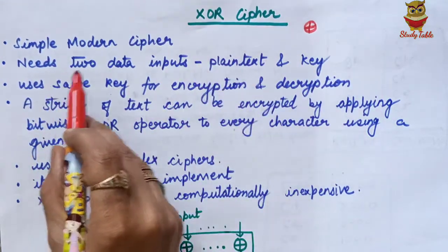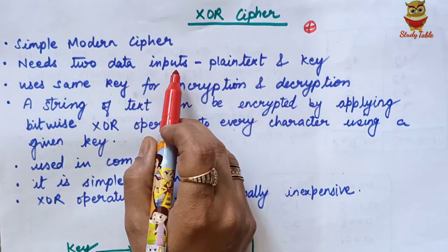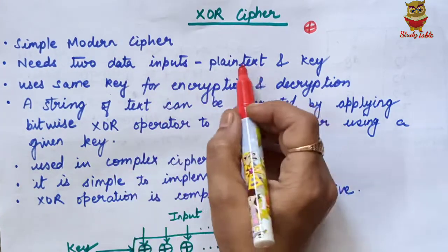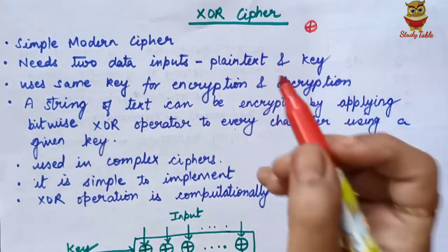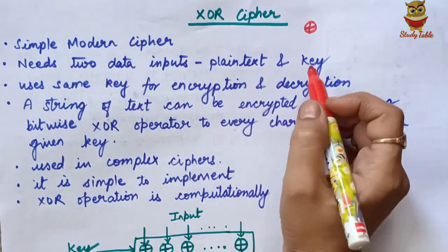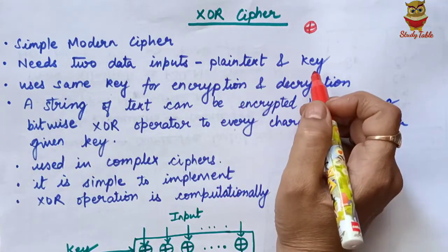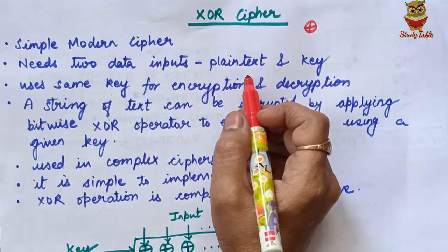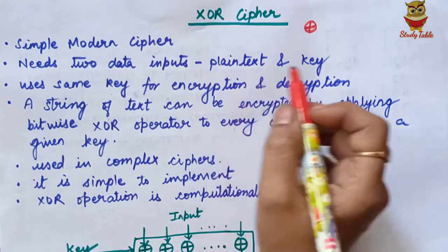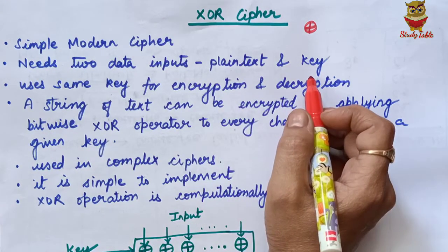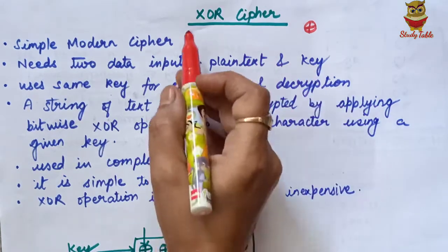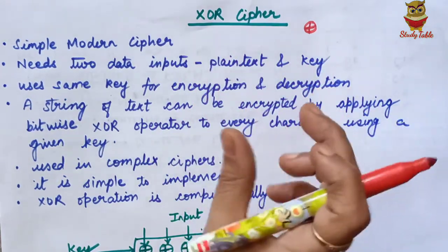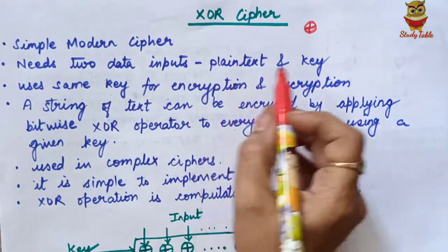In this cipher, we need two data inputs: the plain text and the key. The plain text, key, and cipher text size all remain the same. If my plain text is 4 bits, then the key will be 4 bits, and the cipher text created by applying the XOR operation will also be 4 bits.